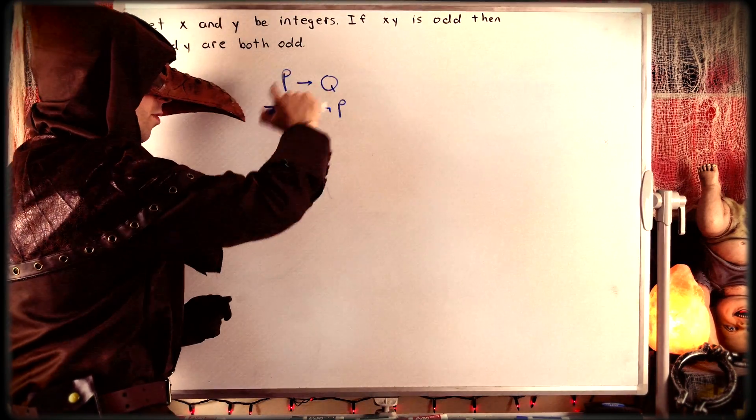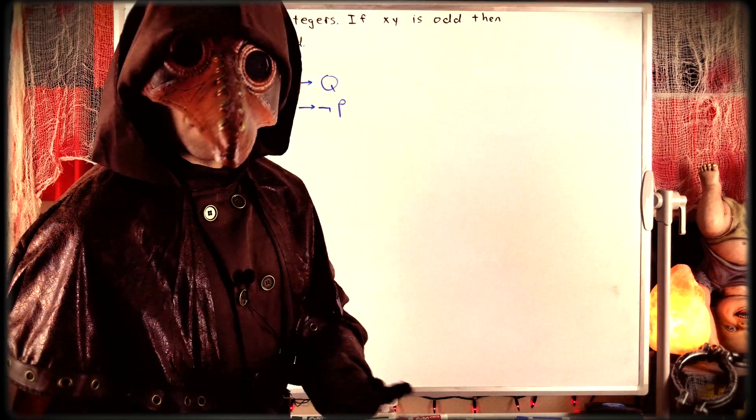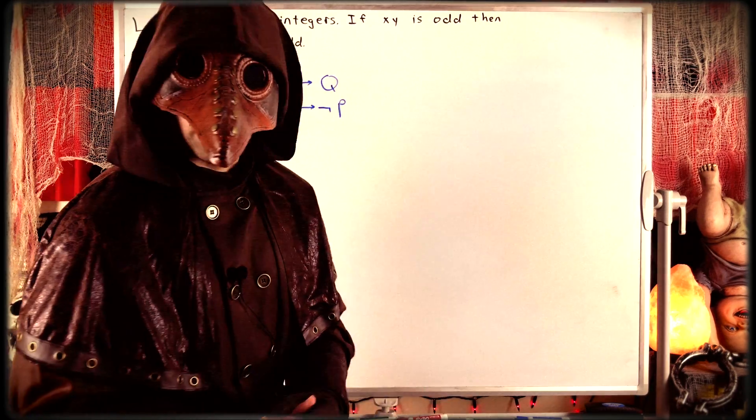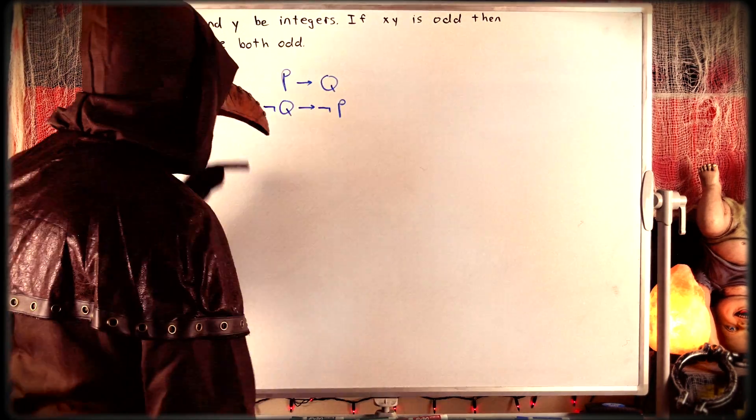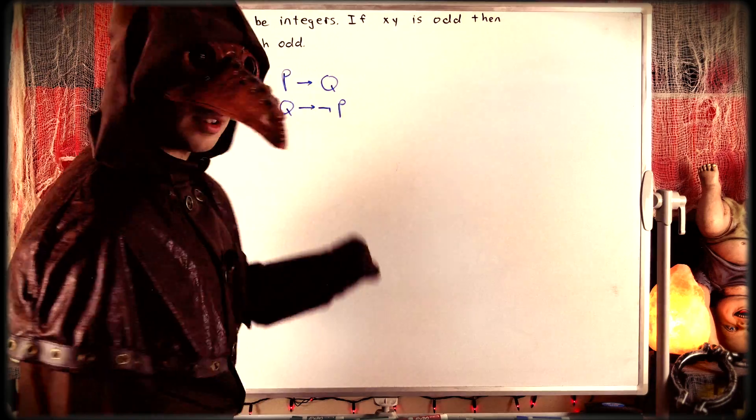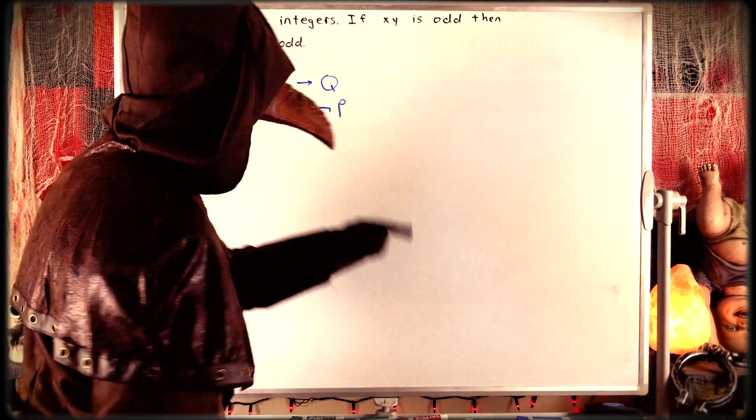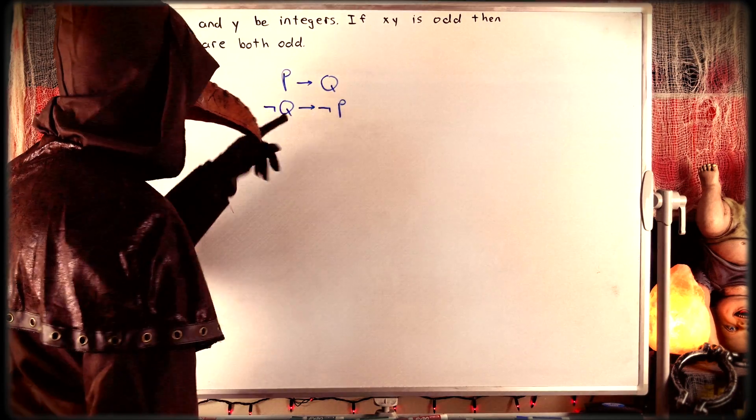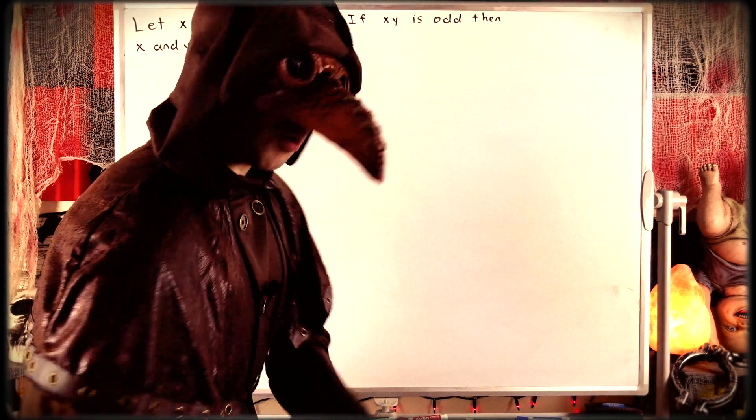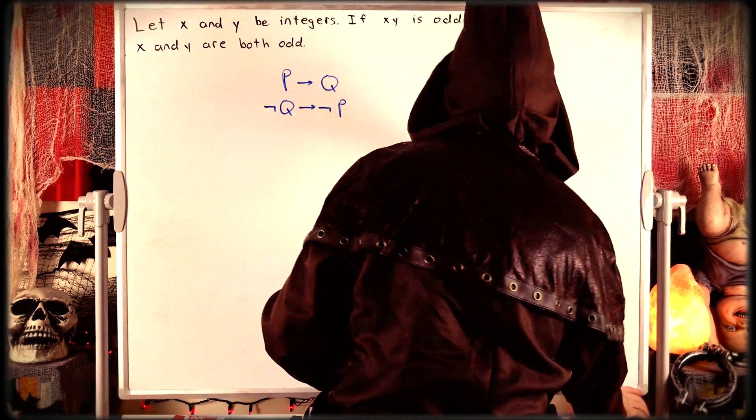It should make some sense intuitively that a statement is equivalent to its contrapositive. Just to sort of explain half of the logic: if p being true forces q to be true, then obviously q being false forces p to be false, because if p were true, then q would have been true. So with that said, let's get on with the proof.